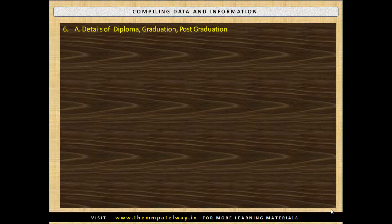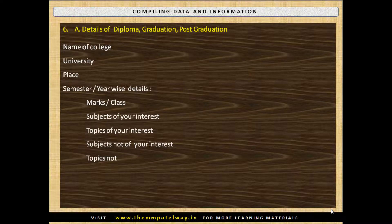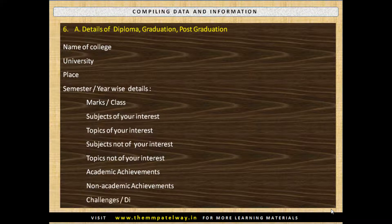Details of Diploma, Graduation and Post-Graduation: Name of College, University, Place, Semester or Yearwise Details, Marks and Class, Subjects of your Interest, Topics of your Interest, Subjects not of your Interest, Topics not of your Interest, Academic Achievements, Non-Academic Achievements, and Challenges and Difficulties faced.